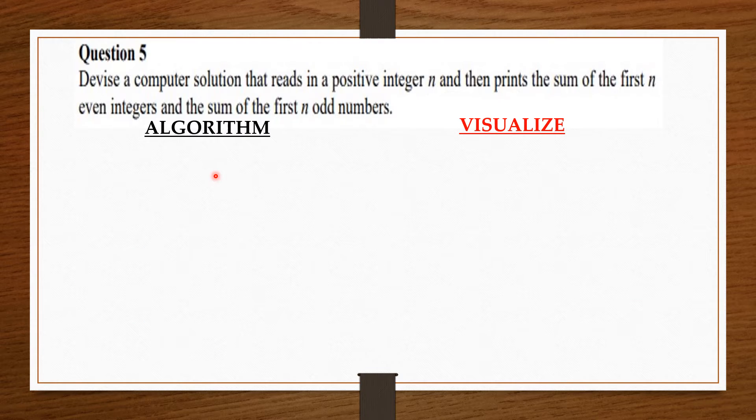Devise a computer solution that reads in a positive integer n and then prints the sum of the first n even integers and the sum of the first n odd numbers. For the algorithm, we are going to ask the user to input the value of n since we don't know what n is.